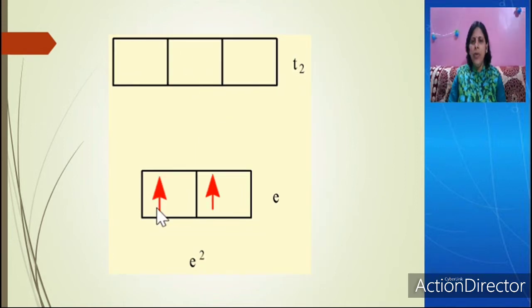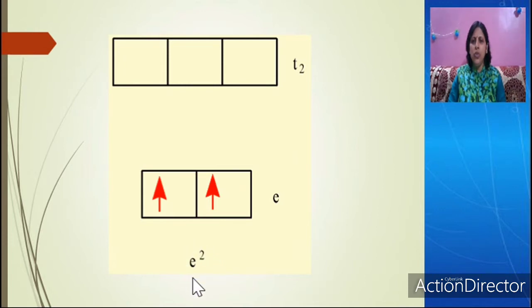Now this is the D2 configuration for the tetrahedral complex. According to Hund's rule, one electron fills in this orbital and the other fills in the next orbital, so that the electronic configuration becomes E2. Again, this is a weak field complex or high spin complex.